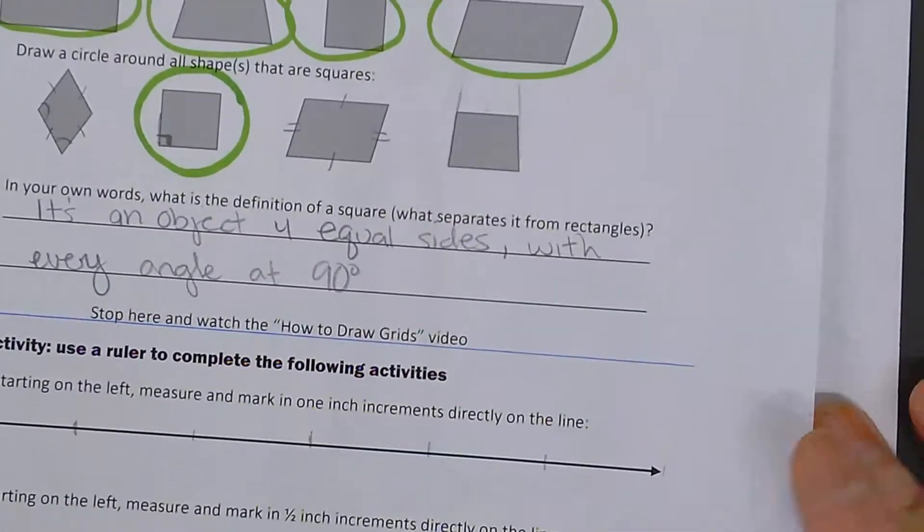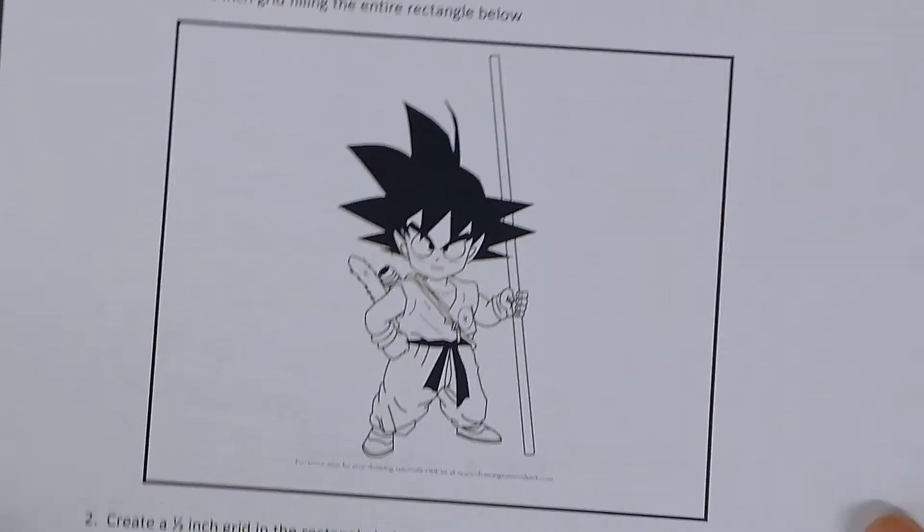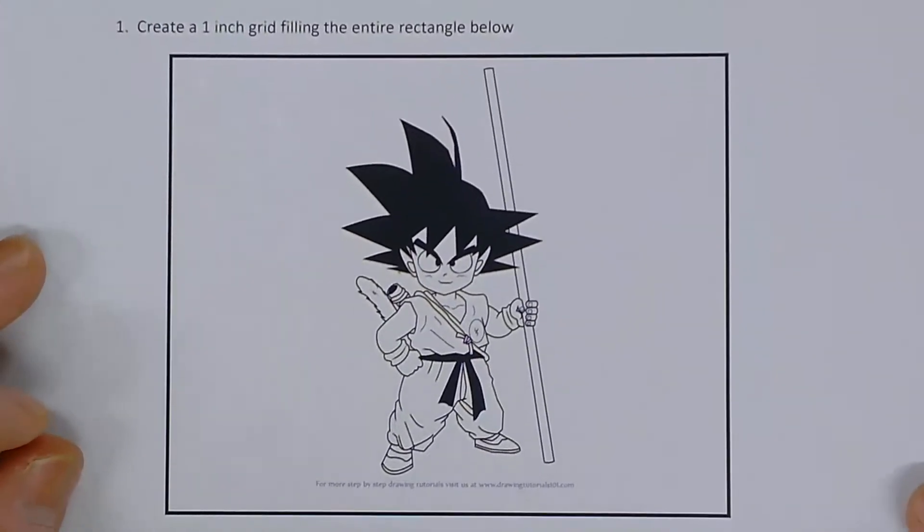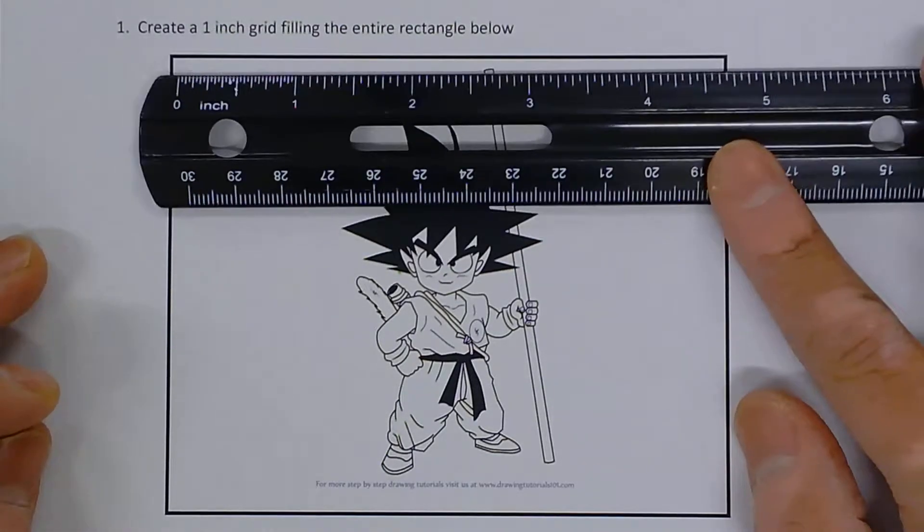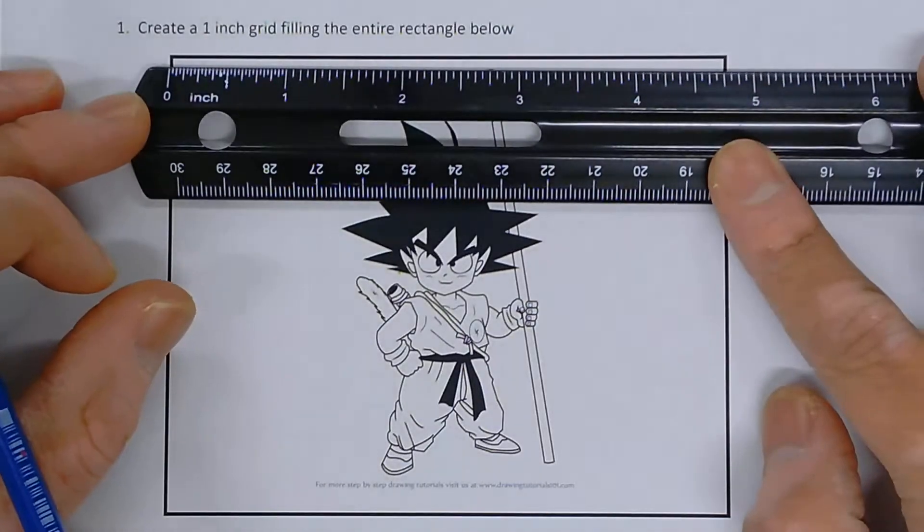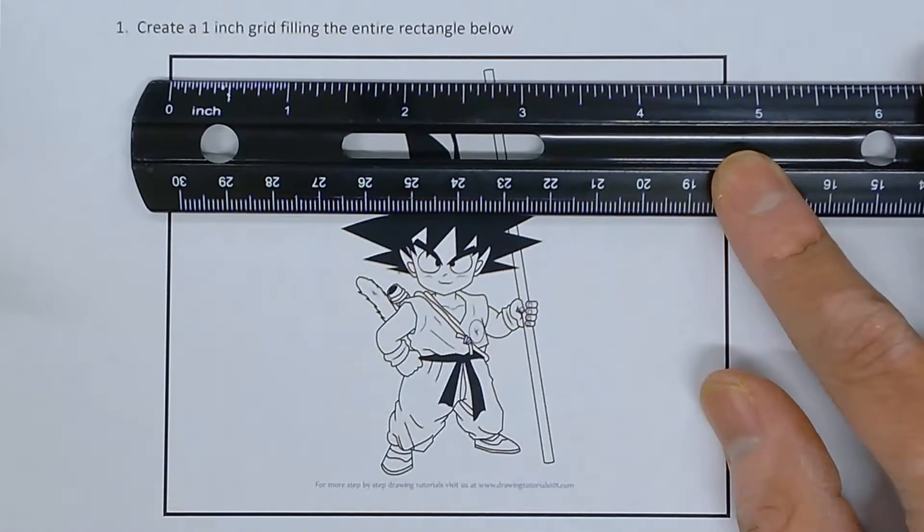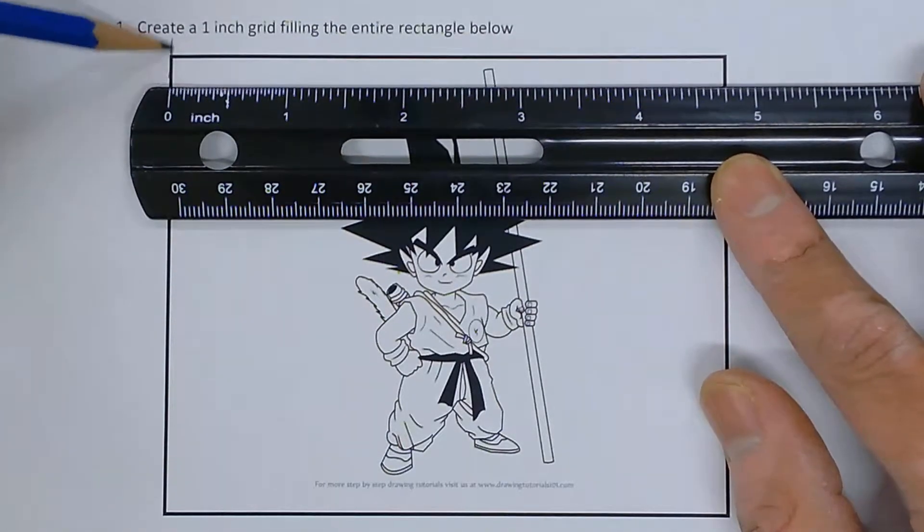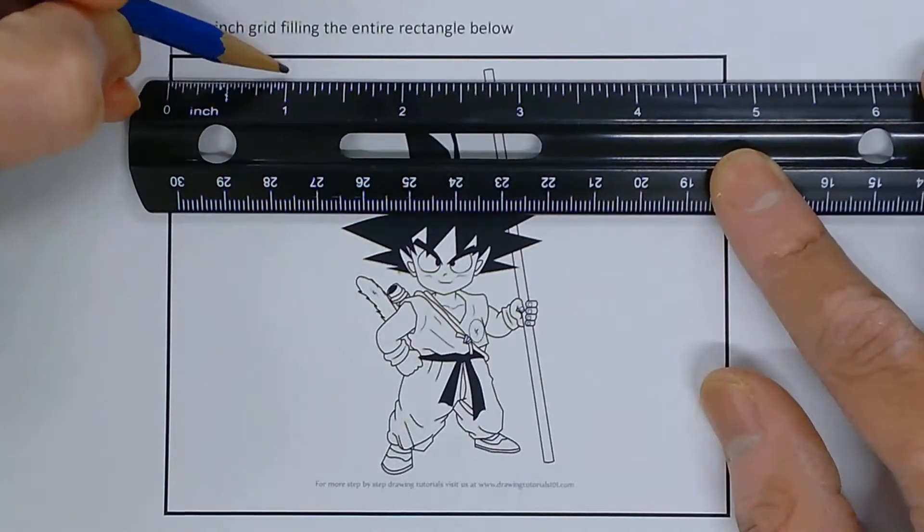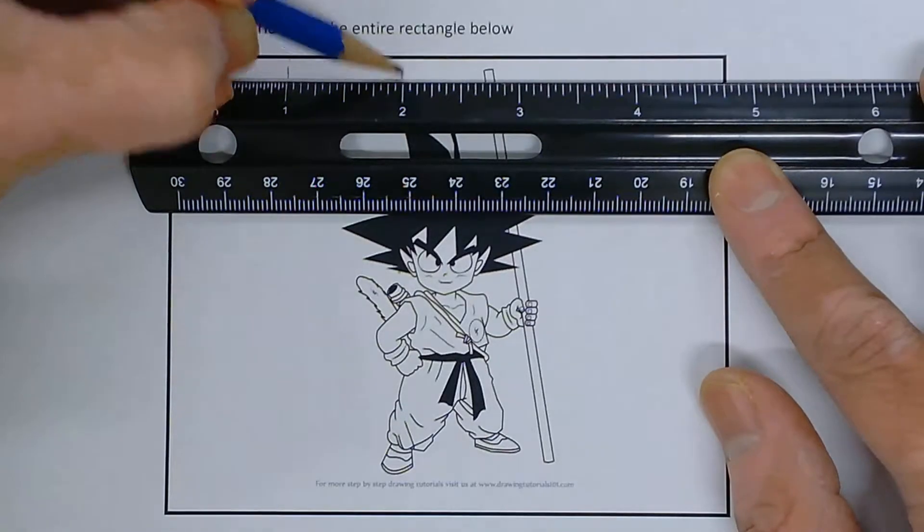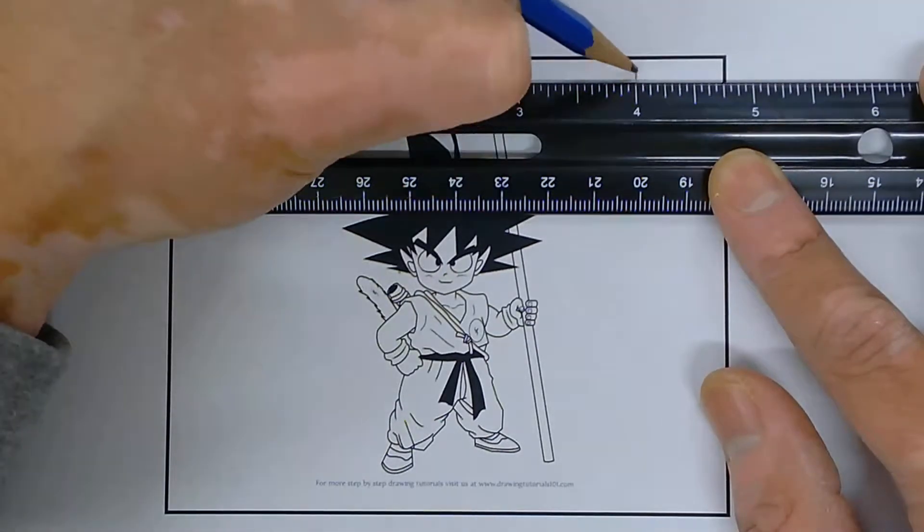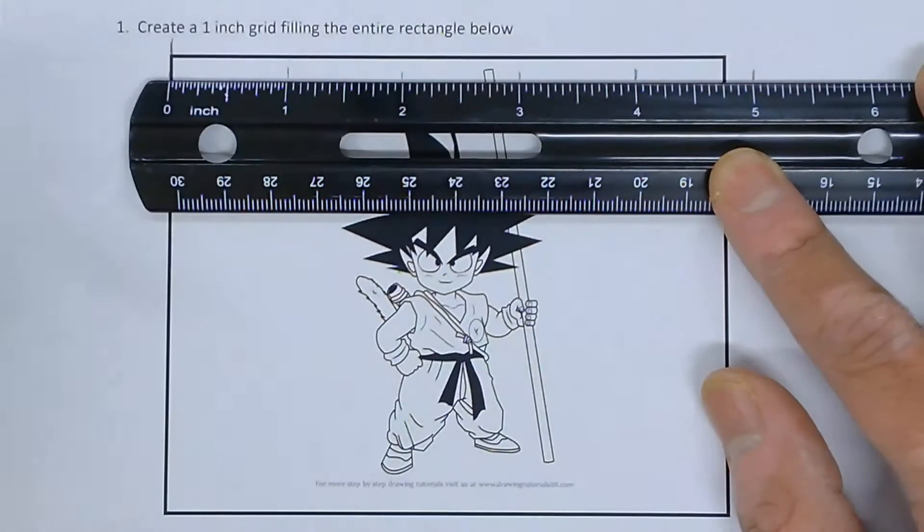It's page one. Page two says create a one-inch grid by filling the entire rectangle below. So here we have a picture of a young Goku. You're going to mark starting on the edge here. My zero should be the edge of this line. What you're going to do is mark in one-inch increments. One, two, three, four. The five is off the page. I'm going to still mark it.